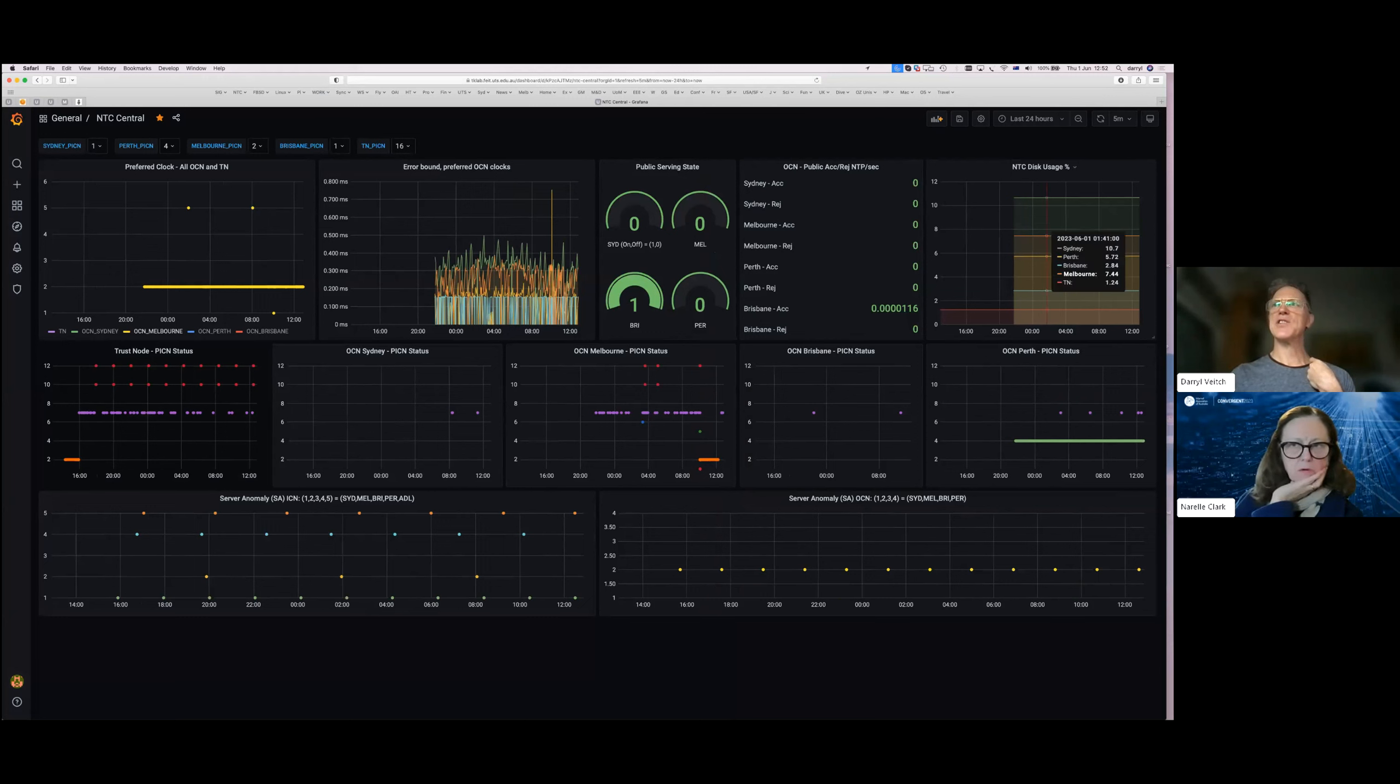This tells us if the OCNs have been switched on to serve packets at the moment. At the moment, Brisbane is allowed to serve the public, but the others are not. Here we have, these plots are status bit plots, and this one's from Melbourne, let's focus on that. This is a bunch of status bits, the most important actions that RADclock takes, that we can summarize here in the form of various status bits. If you see nothing, it means the bit is not set, so this should be sparse.